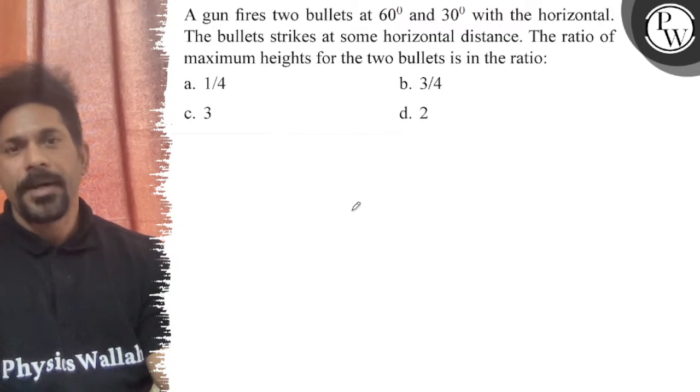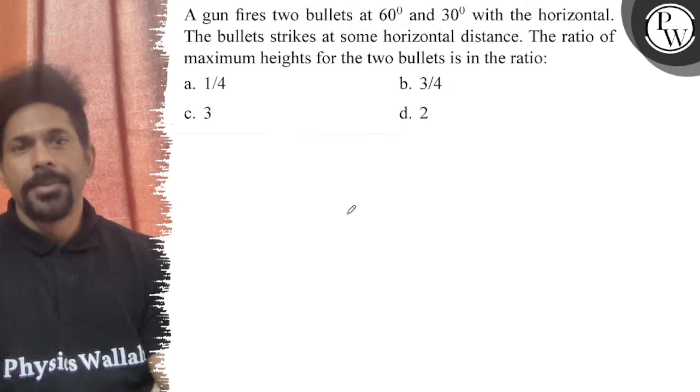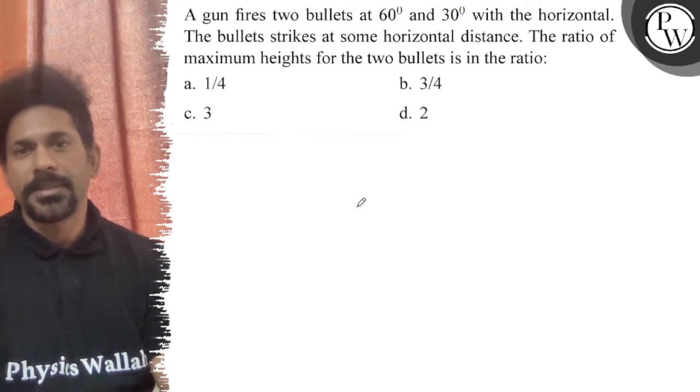Hello, let's see the question. A gun fires two bullets at angles of 60 degrees and 30 degrees with the horizontal. The bullets strike at the same horizontal distance. The ratio of the maximum height for the two bullets is in the ratio...